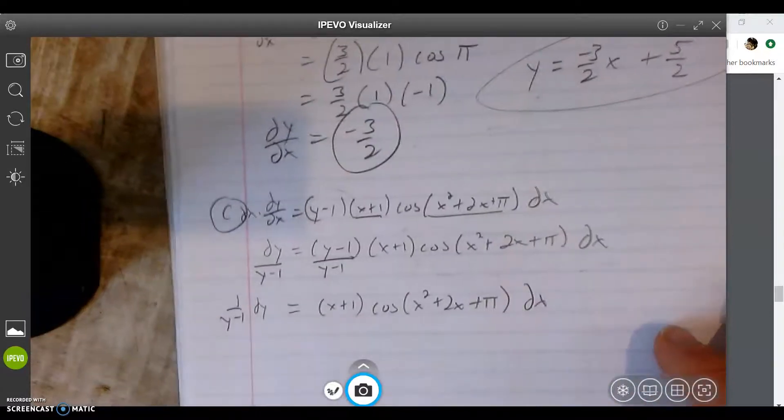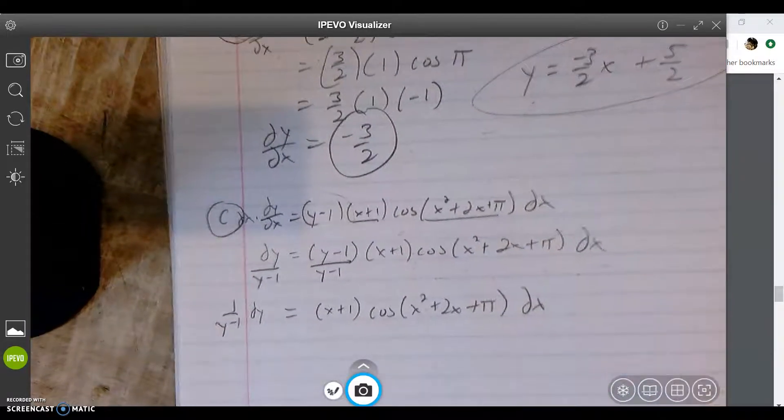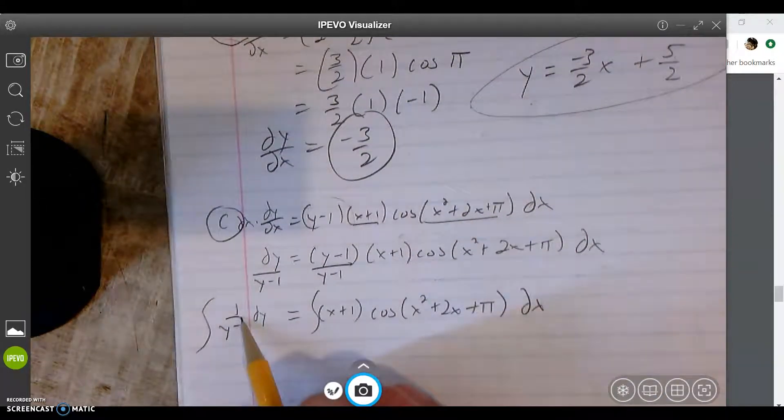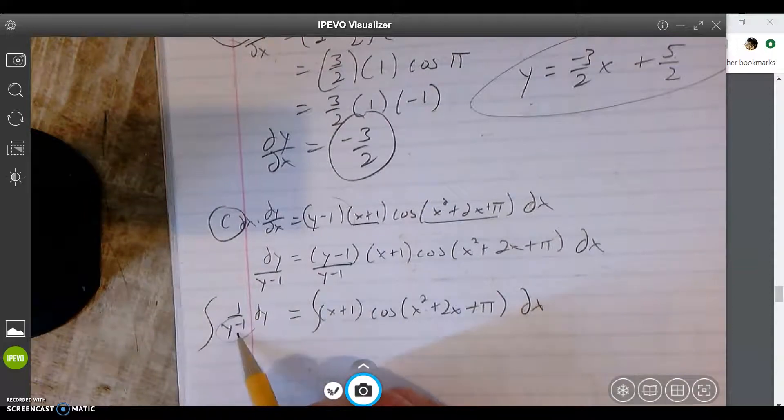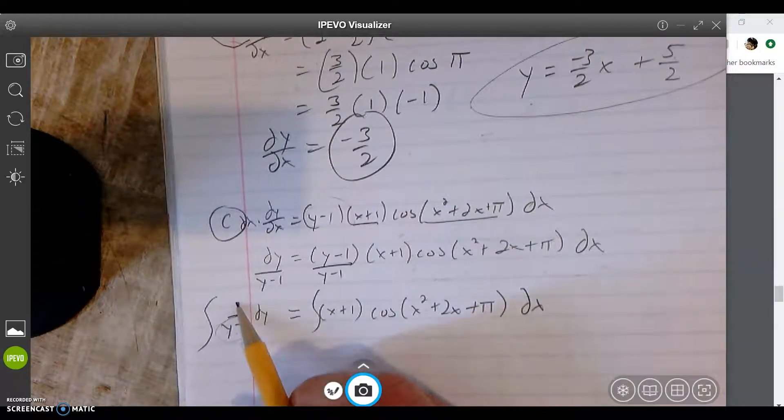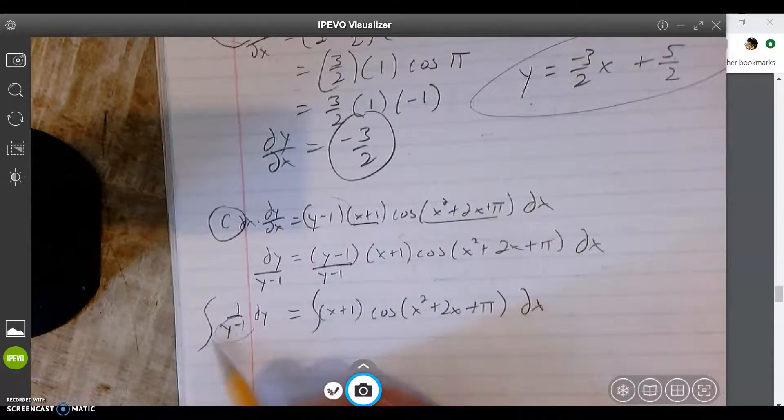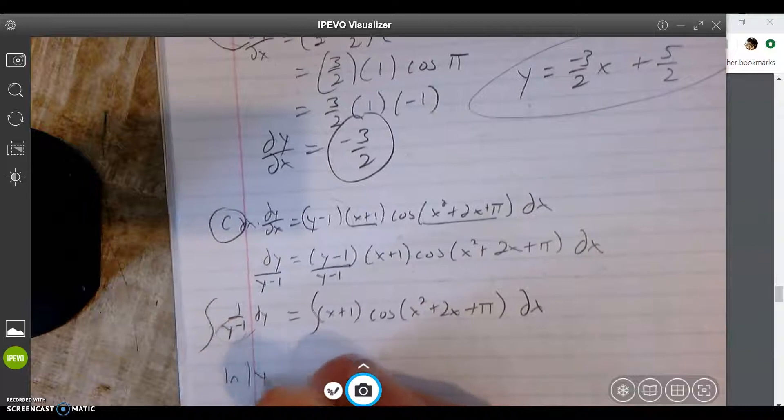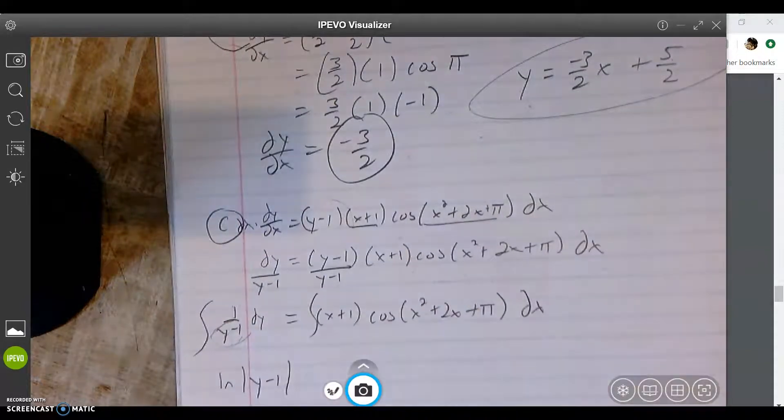Now I got my x's and my y's. So I got 1/(y-1) dy = (x+1)cos(x²+2x+π)dx. We've separated, we're good. We're going to get points for that because we separated properly. Now we've got to integrate. Separate, integrate. We're going to find the integral of this. What I notice is that the derivative of the denominator is the numerator, right? The derivative of this is 1. So this is natural log of |y-1| is the anti-derivative.